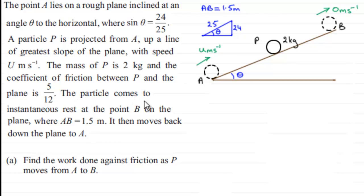We're told that the particle comes to instantaneous rest at the point B on the plane, where AB is 1 and a half meters.